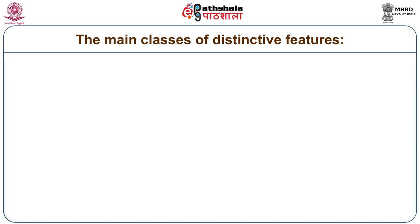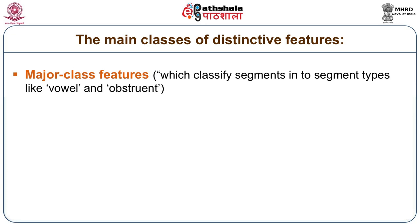The universal set of features can give us all the possible distinctive sounds in world languages — and that is why they are called distinctive features. There are four sets of distinctive features: major class features, laryngeal features, manner type features, and place features.